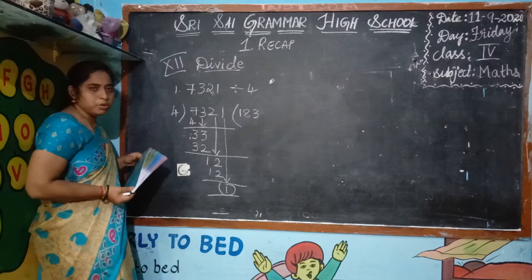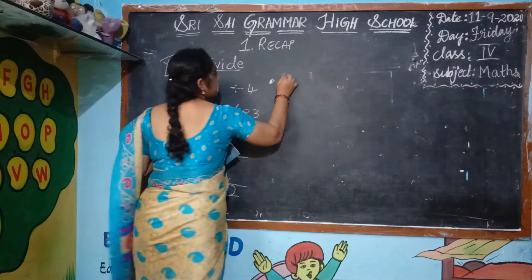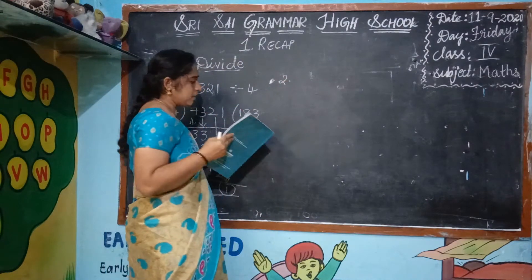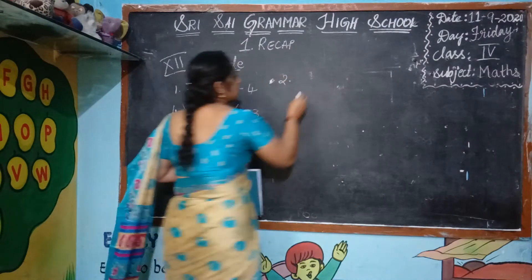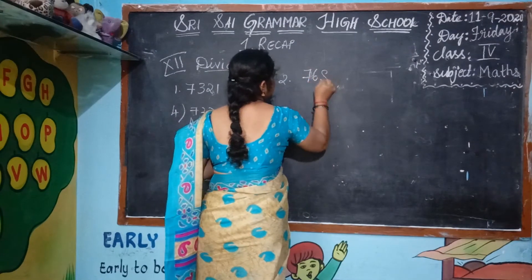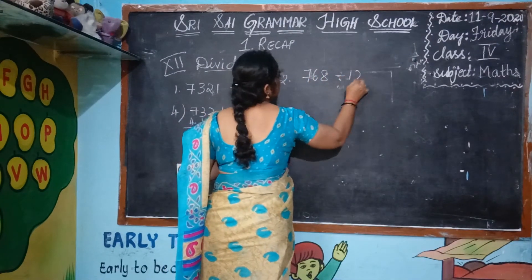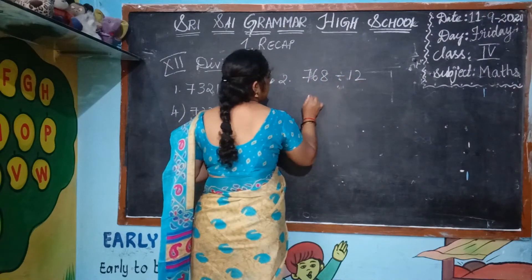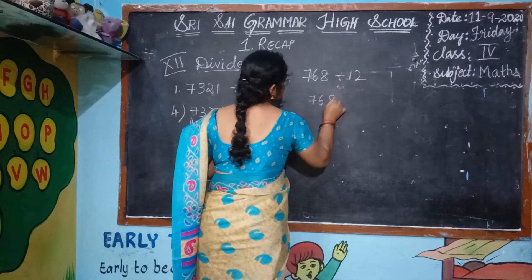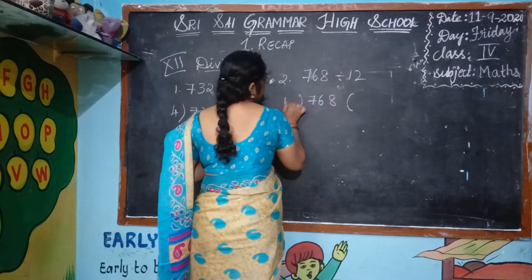You know how to do division. Now we have two sums in this bit. 768 divided by 12. Now you have to divide 768 with the 12 times table.